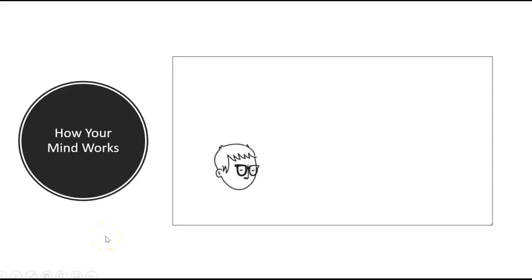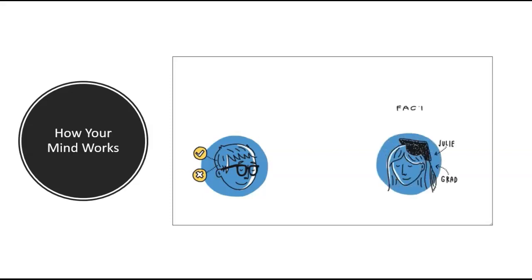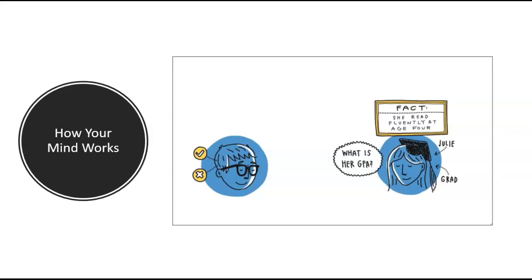If you want to know how your mind works and the kinds of things it does right and wrong, here's an example. Julie is a graduating senior, and I'll tell you one fact about her: she read fluently when she was four. What is her GPA? Interestingly, just about everybody will report that a GPA came to mind, and we have a pretty good idea of what it is — more than 3.2, less than 3.9, probably around 3.7.